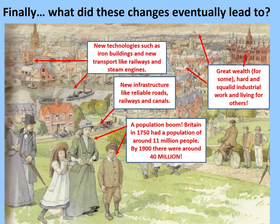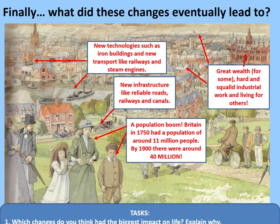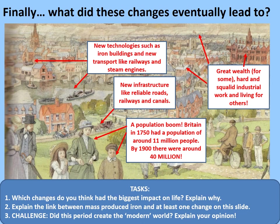Your final tasks: which changes do you think have the biggest impact on life? There's no right answer, but make sure you explain why. Explain the link between mass-produced iron and at least one change — it could be one you identify yourself. And lastly, did this period create the modern world as we understand it today? Explain your opinion. Once you've done those tasks, that's the end of the video and the lesson. I hope you found it useful. If you were able to, like this video, and I'll be back for more content soon. Thank you, and goodbye.